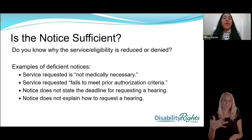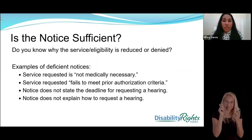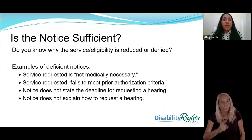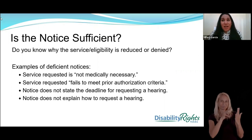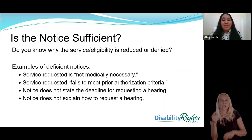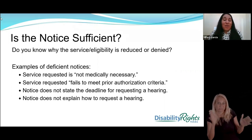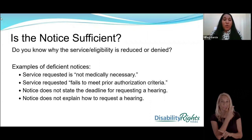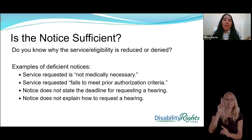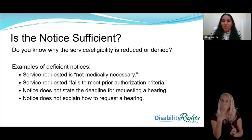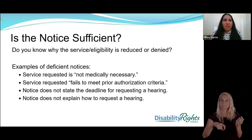Denial notices can be vague or not specific enough to the individual beneficiary. When reviewing your notice, ask yourself certain questions. When we speak to clients, it's often not difficult for them to realize the notice is inadequate — we ask them 'what is the reason?' and they respond 'I don't really know, this is what it says but it doesn't make sense.' If that's what you're thinking when reading your notice, chances are it's probably an inadequate notice. We want to point out common key words or phrases found in denial notices that are very vague — for example, 'not medically necessary' doesn't necessarily tell you anything.